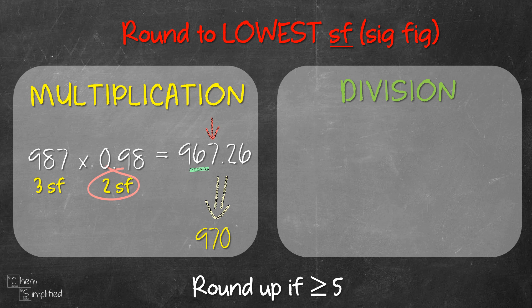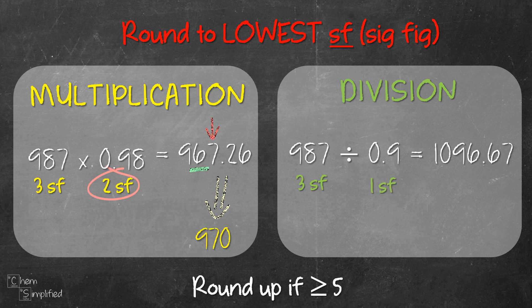Looking at the division example, we have 987 divided by 0.9. We follow the same rule, which is to round off to the lowest sig fig. The first number 987 has 3 sig figs and the second number only has 1 sig fig, so our answer is going to be in 1 sig fig. When we divide, we get 1096.67. Rounding to 1 sig fig, we look at the second digit, which is 0. Since 0 is less than 5, we don't need to round up, so the answer presented in the correct sig fig form is 1000.